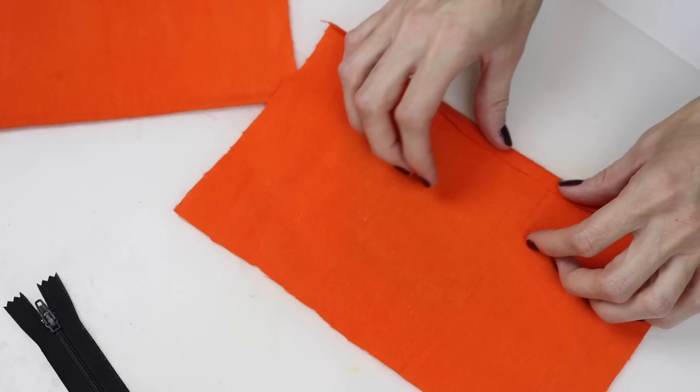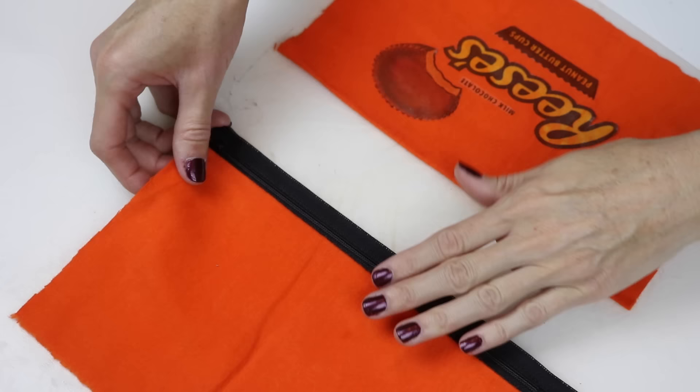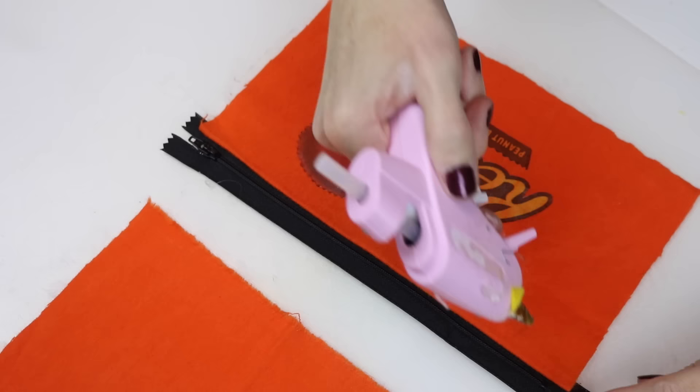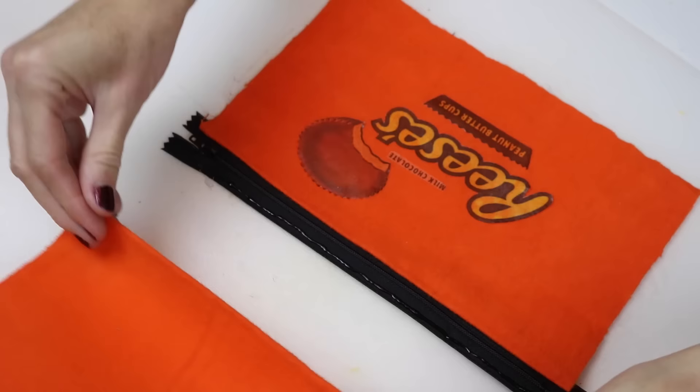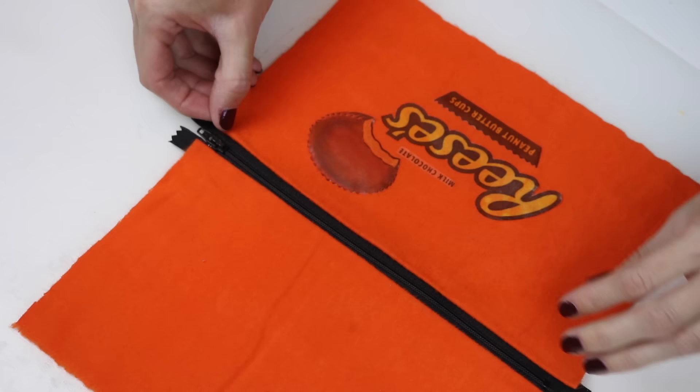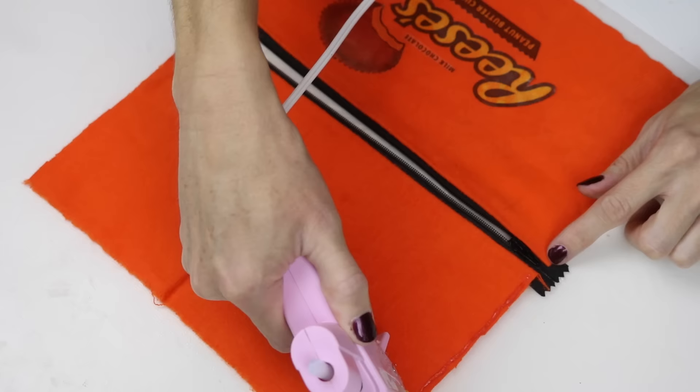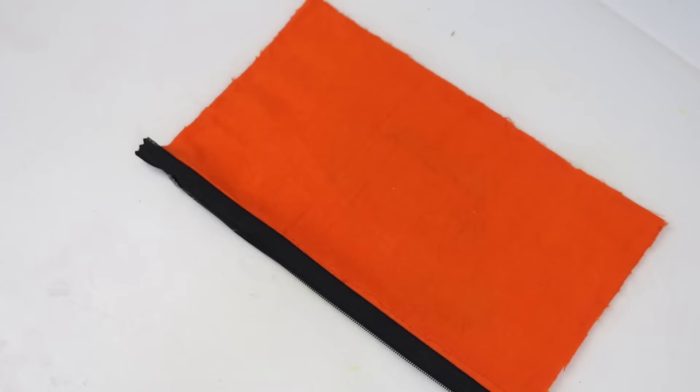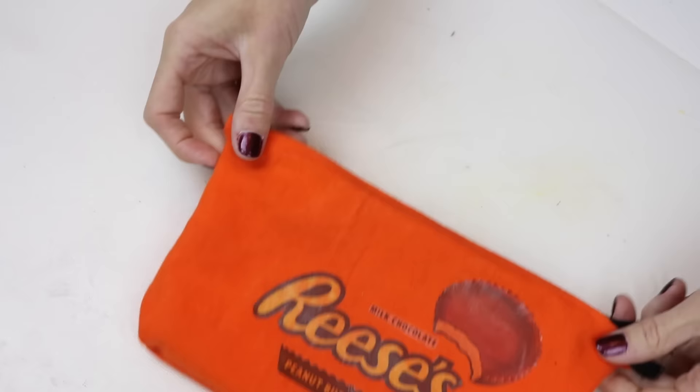Then you will want to glue those to your zipper as you see me doing here. Now unzip the zipper and glue your fabric like I am doing. Fold over and wait for the glue to dry. Once it's dried, turn your bag inside out, and there you have your Reese's Peanut Butter Cup bag.